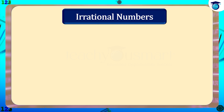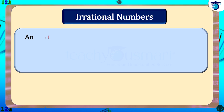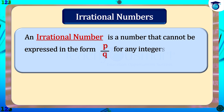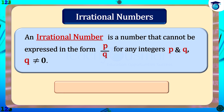Such types of numbers are called irrational numbers. An irrational number is a number that cannot be expressed in the form p/q for any integers p and q, where q is not equal to zero. Therefore √2 is an irrational number.